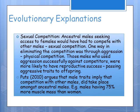Evolutionary explanations suggest we are aggressive amongst our own species for sexual competition. Ancestral males competing for access to females could eliminate competition through aggression, and those who used it successfully gained reproductive success, passing on aggressive traits to offspring. Males having 75% more muscle mass than women suggests ancestral males did compete aggressively with other males.